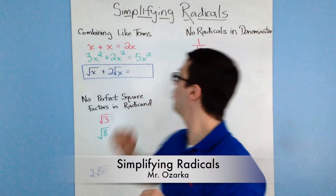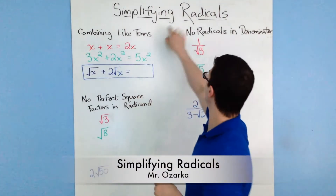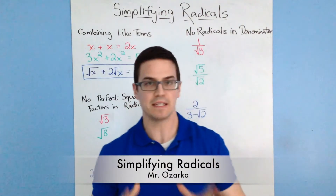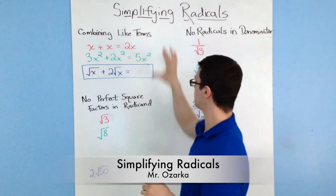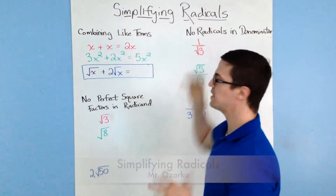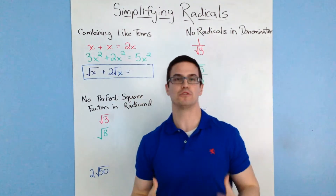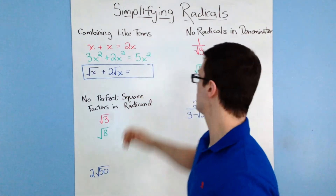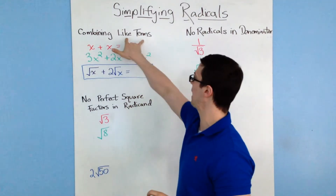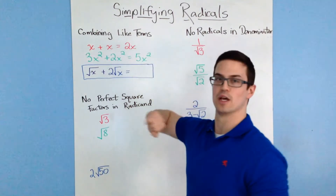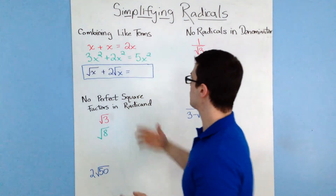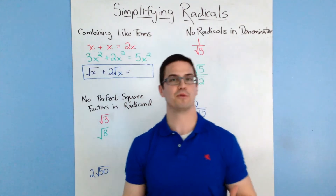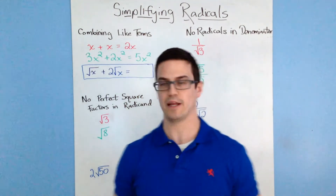This is going to be a video about simplifying radicals. What I did for this video is I broke it down into the three major rules that you need in order to simplify radicals. So this first one is combining like terms. To explain this one, I used two examples of things that you're probably already familiar with.